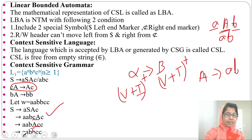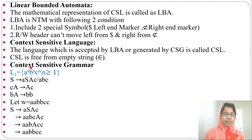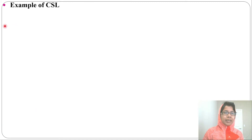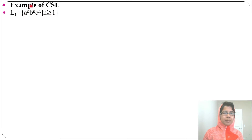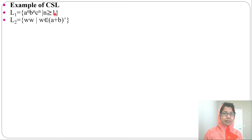In context-sensitive grammar, a production is dependent on its left or right context — that is what context-sensitive means. That's why it is called context-sensitive grammar. Examples of context-sensitive language: a^n b^n c^n where n ≥ 1 is context-sensitive. If n ≥ 0, it would not be context-sensitive. Since n ≥ 1, it is a context-sensitive language.